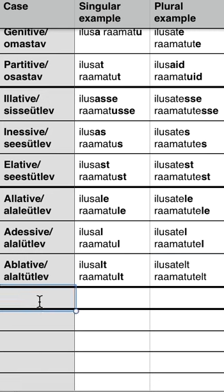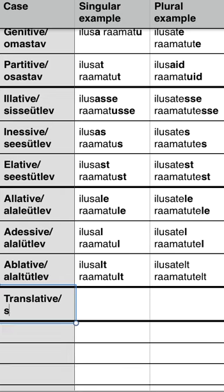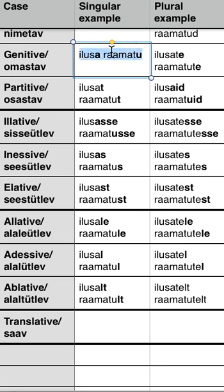The first case would be a very interesting one — it's TRANSLATIVE. In Estonian, translative would be SAV. Let's remember what we have learned before: if we're going to start forming any other cases, we're going to base them all off genitive. So let's just use 'ilusa raamattu' as our base.